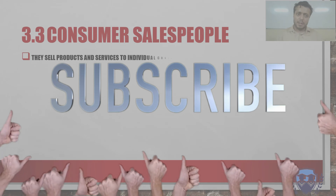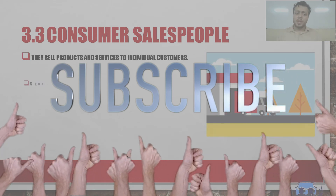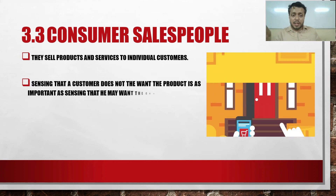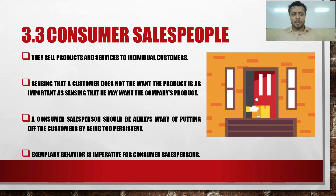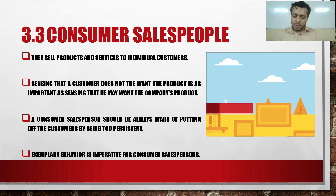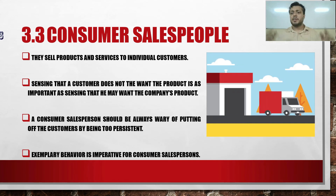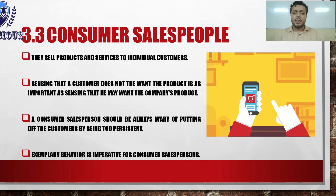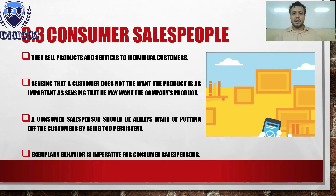Next is consumer salespeople. As the name suggests, they sell directly to individual customers. One very important task for them is not to over-pressurize the customer, because that won't result in a sale — things might actually go the other way. So they need to know when to just stop persuading the customer if he is genuinely not interested. It is a very tricky kind of job.